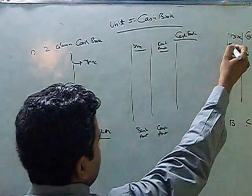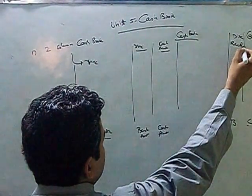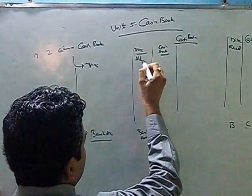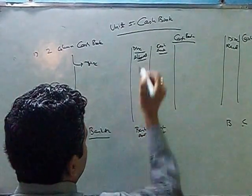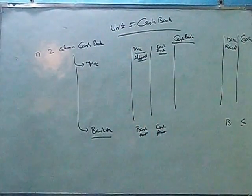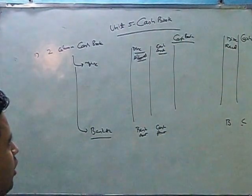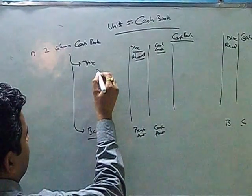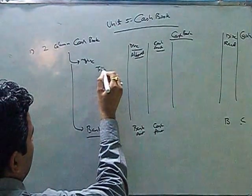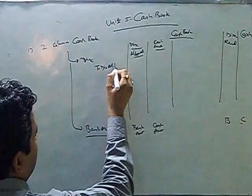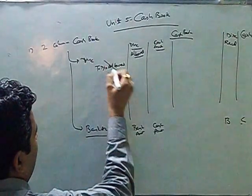And this is as you know a column for discount. You see this is a column for discount. And we simply mention that. Remember there will not be any entry for narration. We will not be mentioning to discount. We will not be mentioning that.